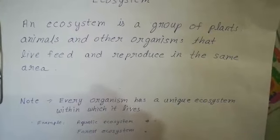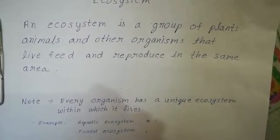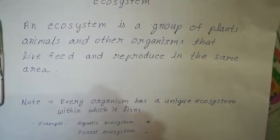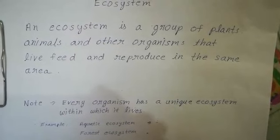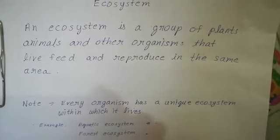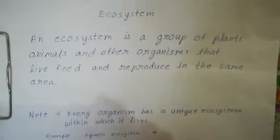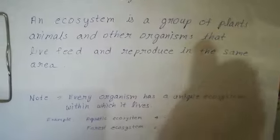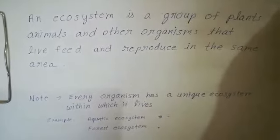Examples: Plants and animals in water bodies form an aquatic ecosystem. Plants and animals in a forest form a forest ecosystem. So there are many other ecosystems also.